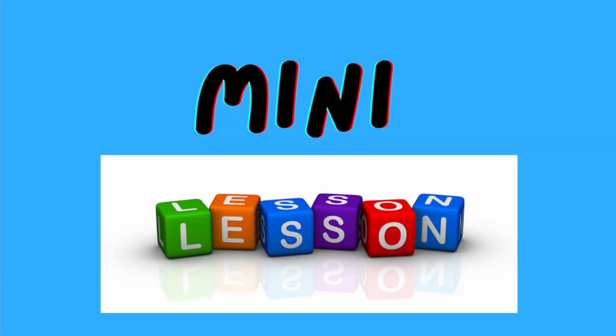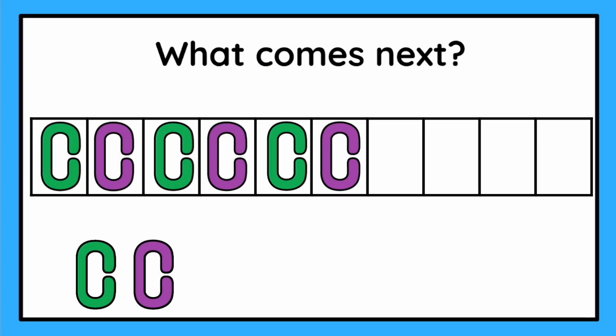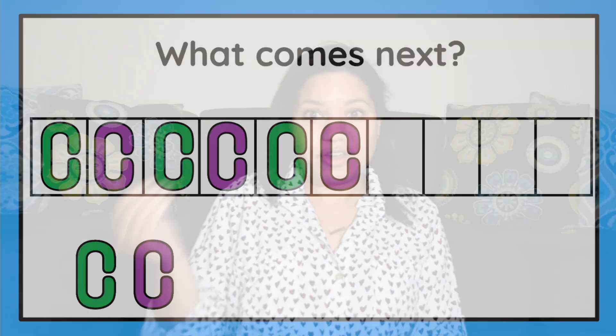Next comes the mini lesson. I'll start the mini lesson with a pattern presented and ask the kids what they notice. Some students will tell me the colors; some kids will say, oh, that's a pattern. If a kid tells me it's a pattern, I'll ask them to explain in their own words what the pattern is. They'll usually say something like, oh, it's something that repeats. Then I explain what repeat means if we're not sure about it, and finish up that pattern together.